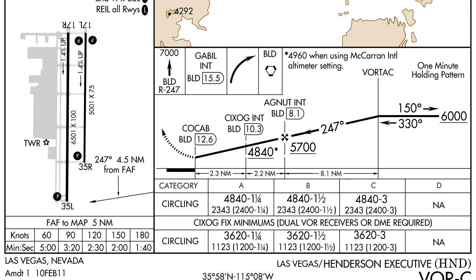In this lesson, we're going to look at the profile view of an instrument approach chart. The profile view is a side view of the approach procedure, which shows you the altitudes that you need to know to successfully fly the approach.